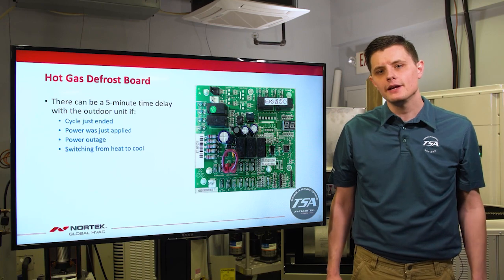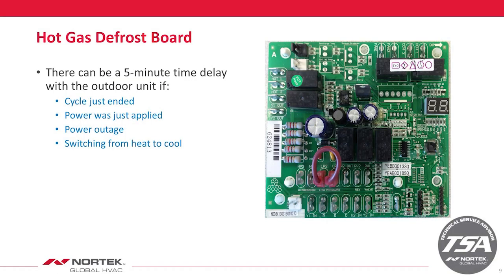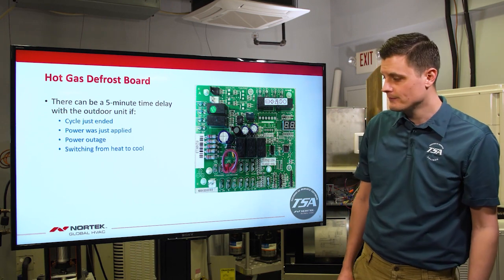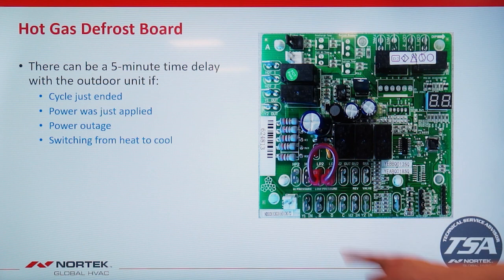There will be a five-minute time delay in the following situations: if a cycle just ended and you recall another heating or cooling cycle, you'll see an SC code. Also, if power was just applied on a new startup or after a power outage, you'll automatically have a five-minute time delay. Switching from heat pump mode to cooling mode will also give you a five-minute time delay. To bypass the short cycle timer during troubleshooting, jump the test pins for one second.